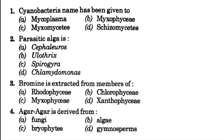So the first question is: cyanobacteria name has been given to — blank. Before starting the question, note that since the question screen is a bit far, you should watch the video at 360p to view the question and options clearly.